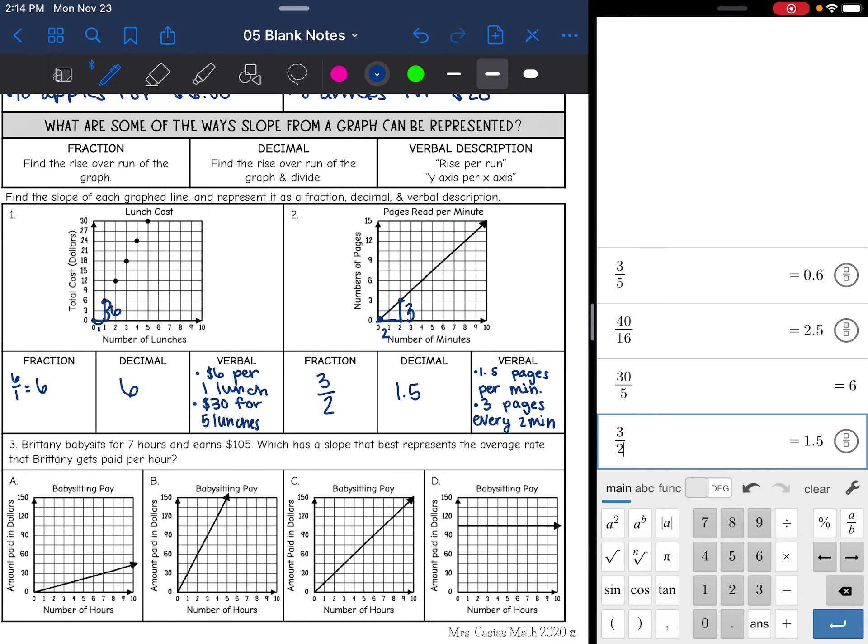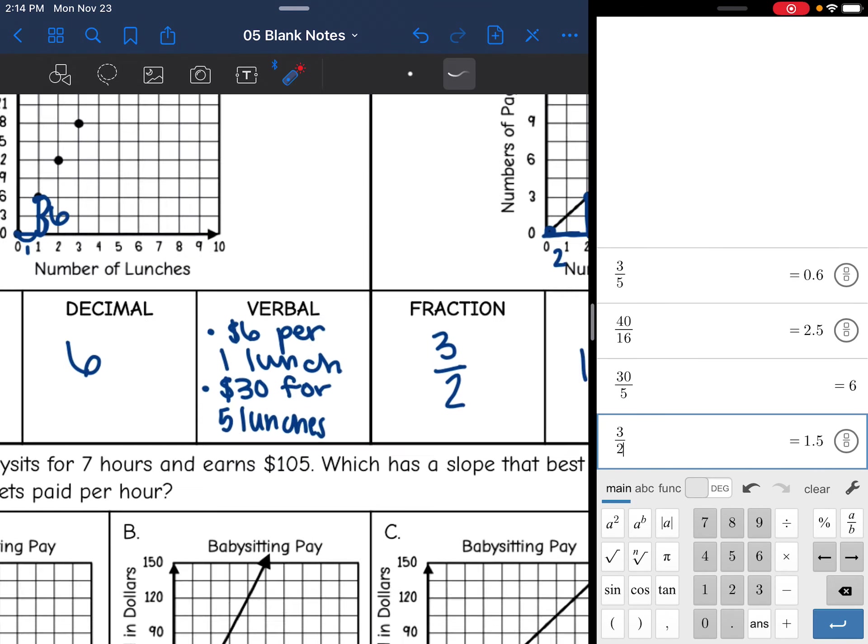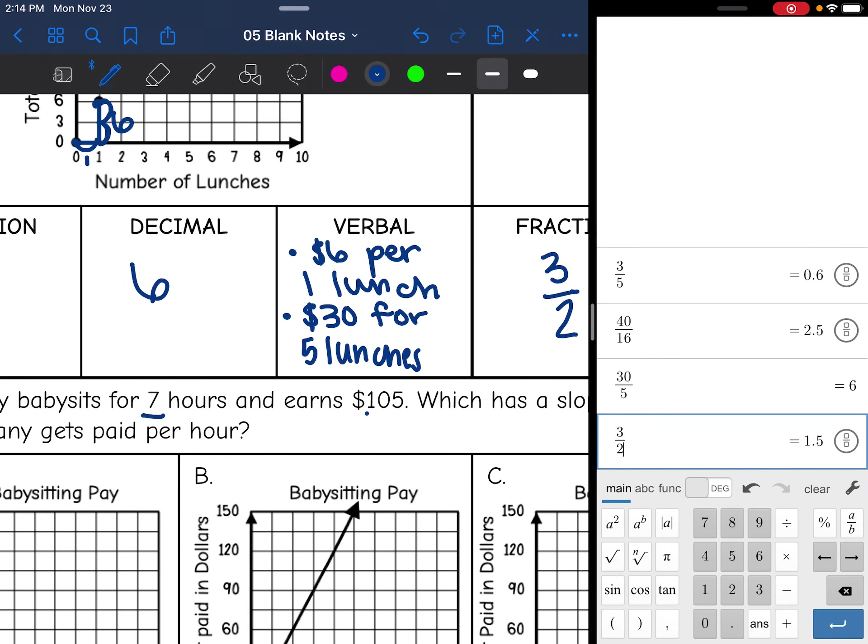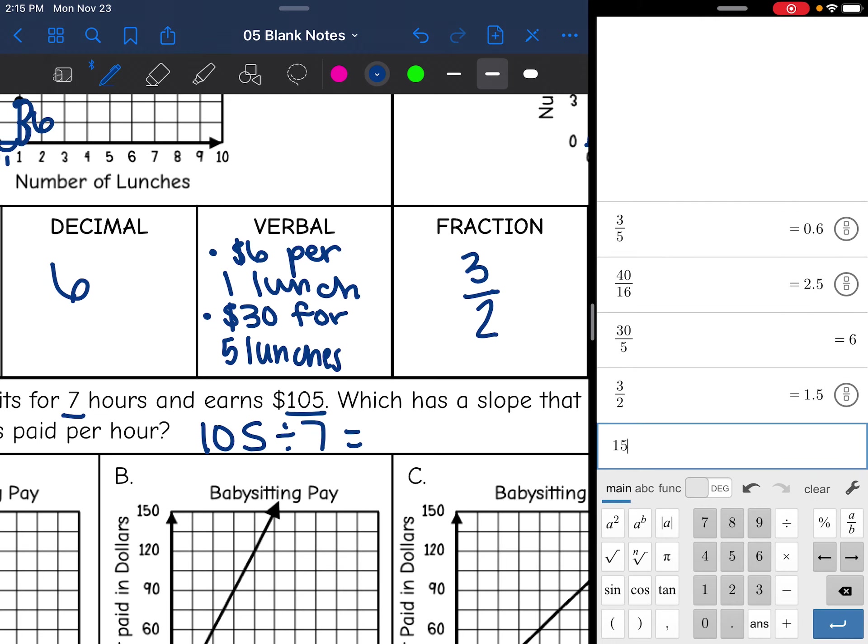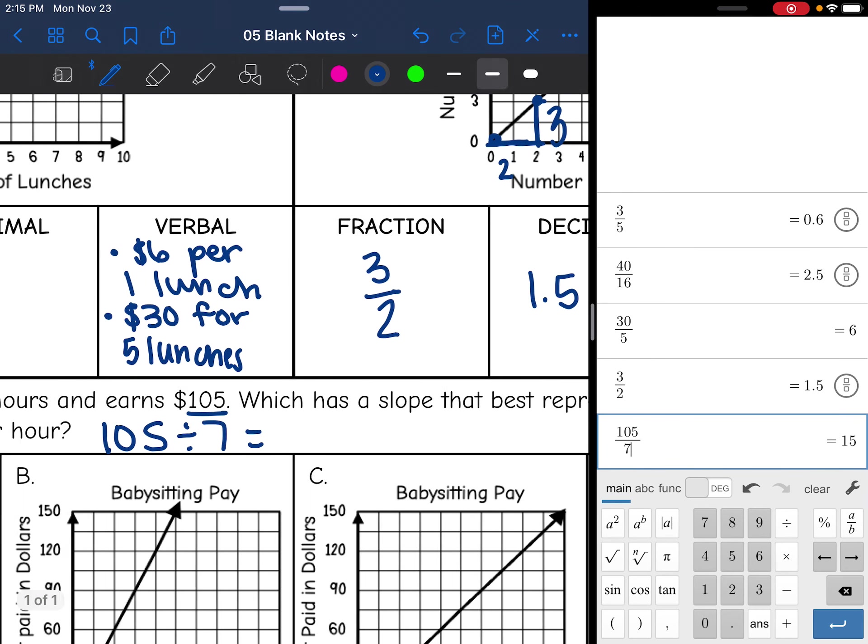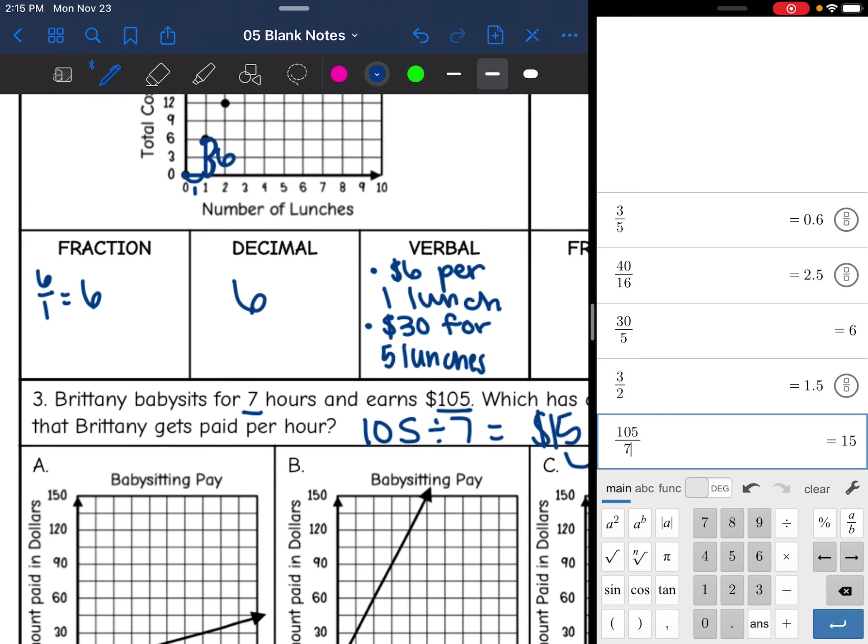Now that we've had a little practice representing slope in different ways, let's see if we can match a unit rate given to a graph. Number 3 says Brittany babysits for 7 hours and earns $105, which has a slope that best represents the average rate that Brittany gets paid per hour. It's kind of hard to tell which one exactly goes through 105. So what I'm going to do is I'm going to find the unit rate like we did up here, and then I'm just going to match my graph to it. So she babysits for 7 hours and she earns $105. So I'm going to do 105 divided by 7 to figure that out. And 105 divided by 7 is 15. So I need another graph that has a slope or rate of 15. Let's go through our graphs and figure out which one has a slope of 15.